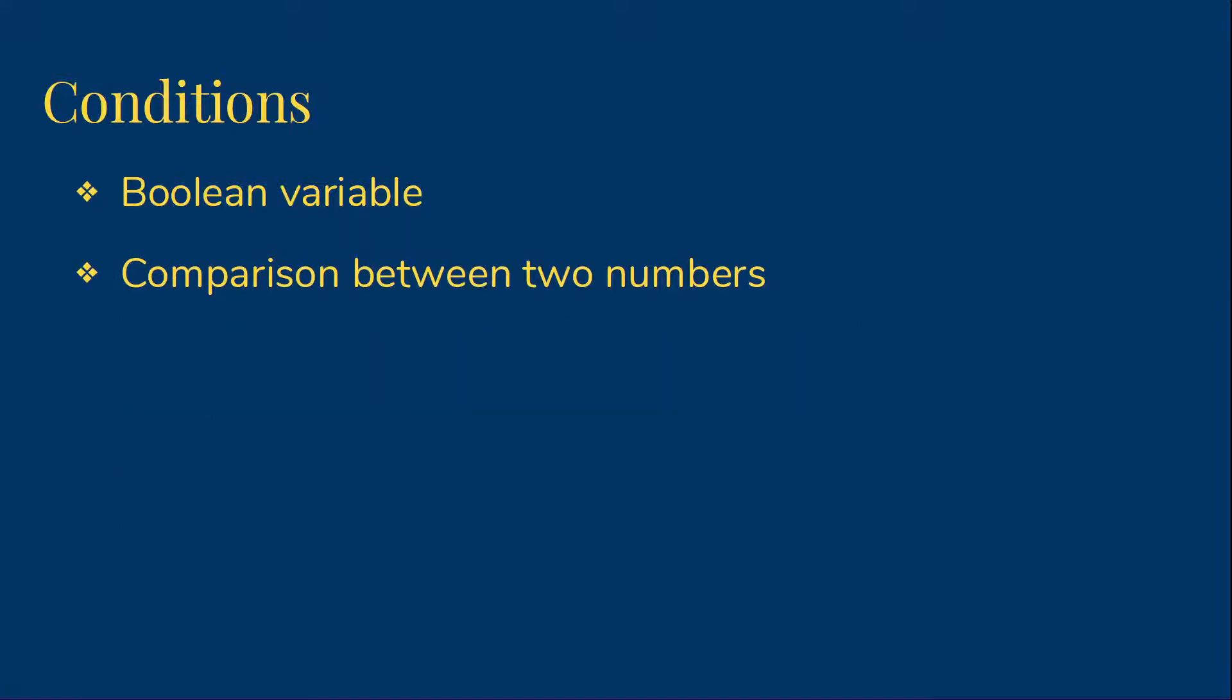Another kind of condition we might have is a comparison between two numbers. For this purpose, we have six relational operators. And notice, it doesn't have to be numbers, it could also be things like characters. Though with objects, we'll talk later about how we can actually compare those. Those don't work with these operators. Numbers and characters do.